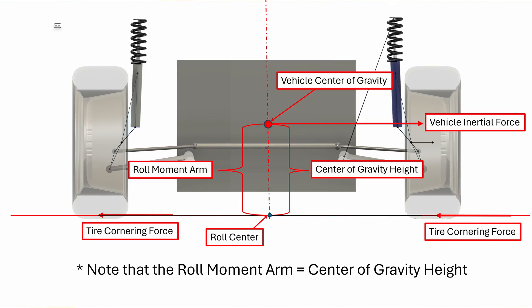If, on the other hand, the roll centers are on the ground — i.e., the roll moment arm is equal to the height of the center of gravity — then all the weight transfer will pass through the springs and none of it will go through the suspension. Remember, weight transfer is a vertical force, not a horizontal force. The suspension will still be carrying all of the horizontal forces from cornering; it will just not be carrying any of the vertical weight transfer force.